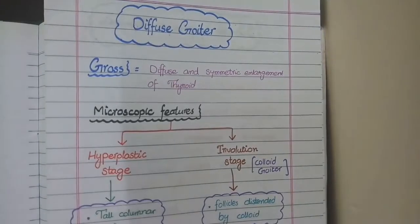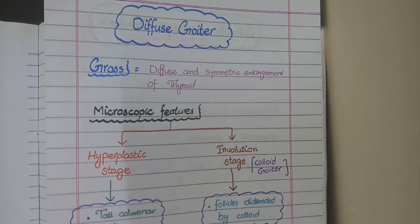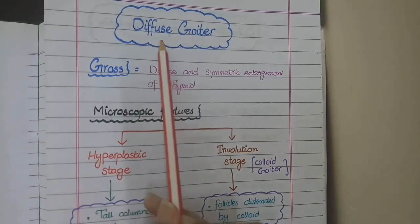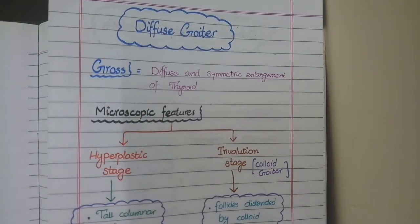In this video, we will study the pathological features of diffuse goiter and multinodular goiter. Firstly, we will study the pathology of diffuse goiter. On the gross specimen, as the name implies, the enlargement of thyroid gland is diffuse and symmetric.